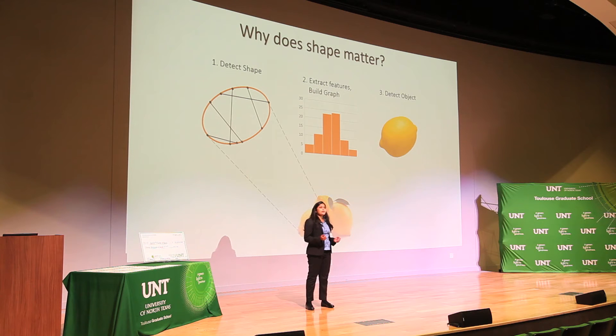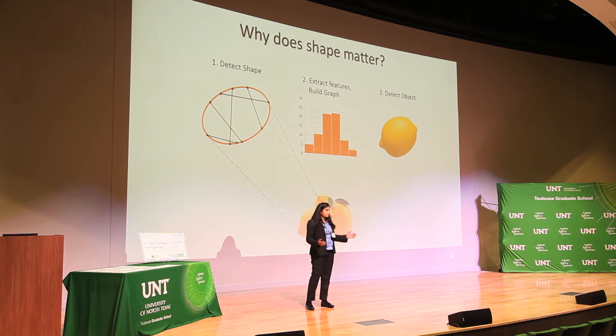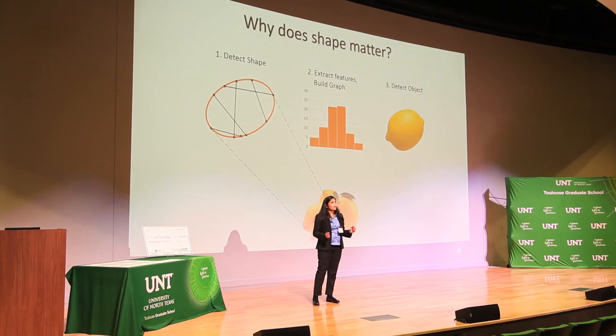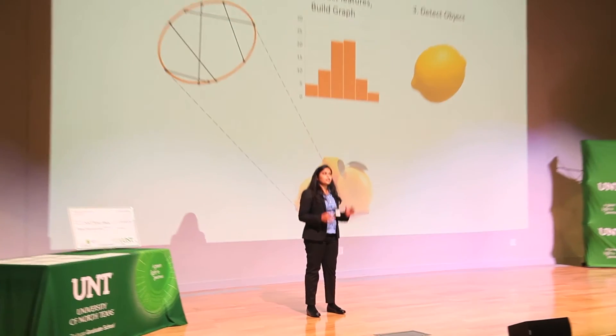Objects can be identified using features such as color, texture, and shape. However, shape is more descriptive and captures the object as a whole. Hence I am using shape.